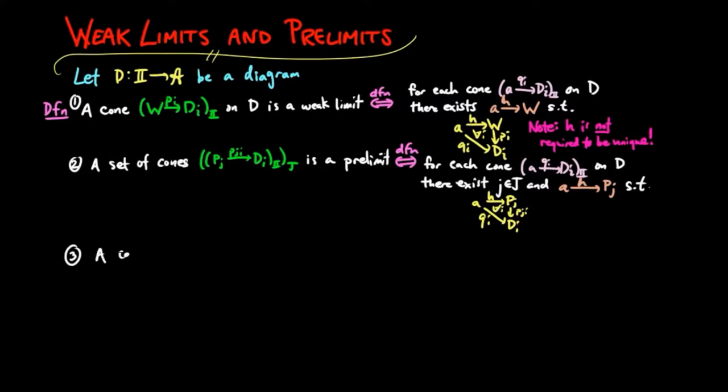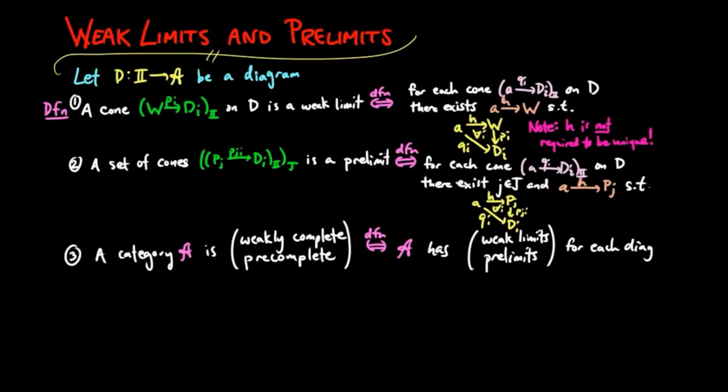Then we say a category A is weakly complete, respectively pre-complete, if and only if A has weak limits, respectively pre-limits for each diagram in A.